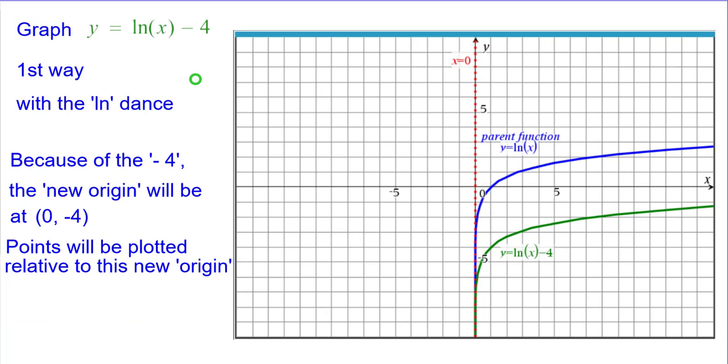Comparing that to the parent function, we can see that from this point to this point, the graph is down 4 from the parent. It's 4 units between these two and in fact 4 units between all points that correspond on these two graphs.